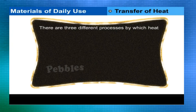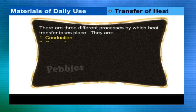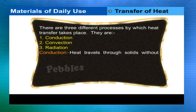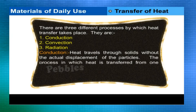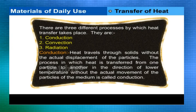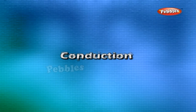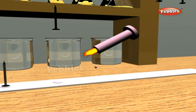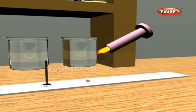Different modes of heat transfer: there are three processes — conduction, convection, and radiation. Conduction: heat travels through solids without the actual displacement of particles. The process in which heat is transferred from one particle to another in the direction of lower temperature without actual movement of particles is called conduction.